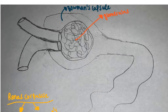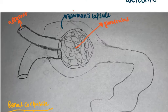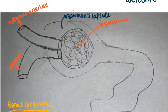Also good to know: this right here is our afferent arteriole, and this is our efferent arteriole. Depending on the type of nephron, our efferent arteriole can branch into peritubular capillaries or the vasa recta. We'll talk about the two main types of nephrons in a later video.